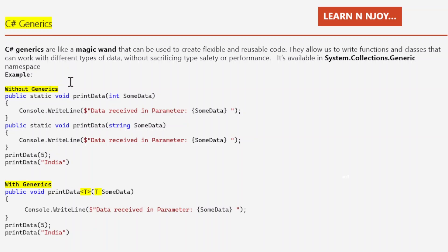Without generics, we need to write overloaded methods to complete the same functionality. For example, I have written two PrintData methods — one accepts an int parameter and the other accepts a string parameter. Both methods do the same thing: they print a statement to the console window along with the input value received.